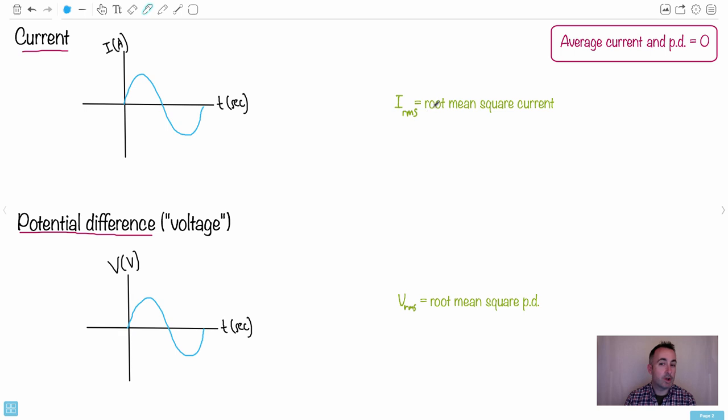So instead we have something called the root mean square, RMS we call it. And the good news is we have an equation given as well. And it just goes like this - it's really nice and easy. It says IRMS, that's the root mean square current, and it's just going to be the maximum current divided by the square root of two. That's what we call the root mean square.